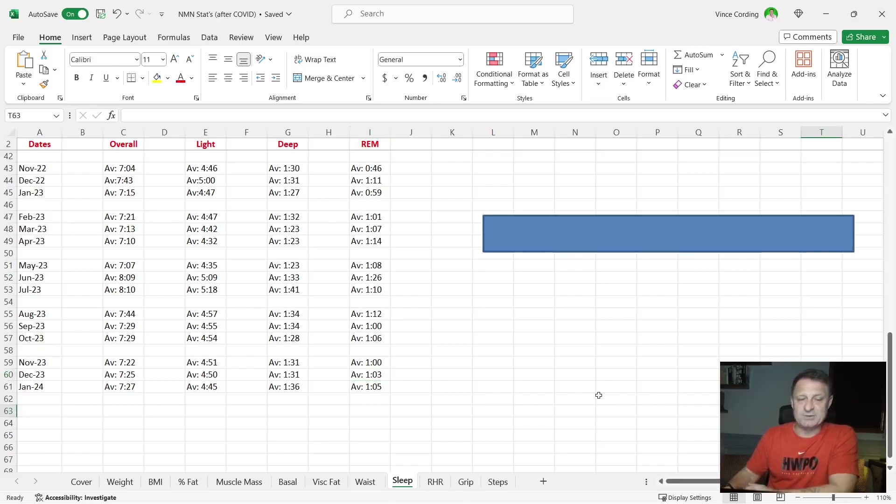In January of 2024, my average overall sleep was seven hours and 27. So that's good. That's the longest it's been in the quarter. My light sleep, four hours and 45. My deep sleep, one hour and 36, which is great. And my average REM sleep, which is up, which is one hour and five. So that's it for my sleep scores.